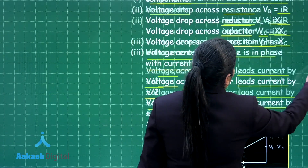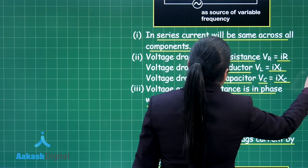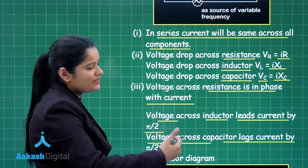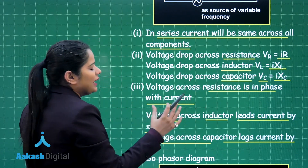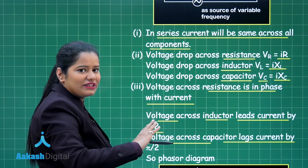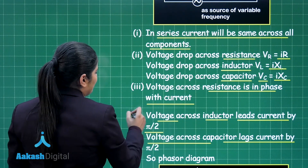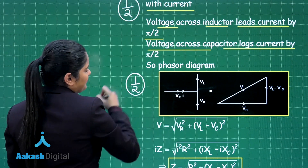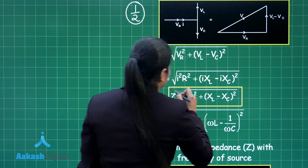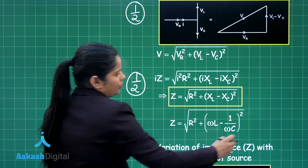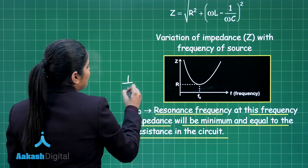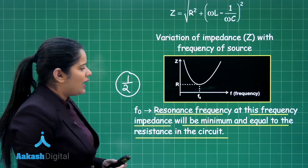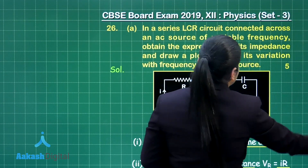This part of the question is for two marks. You will get half a mark for explaining the voltage drop calculation across each component and the phase differences. You will get half a mark for the phasor diagram, half a mark for calculating the impedance, and the final half mark for drawing the variation of impedance with frequency. I hope this marking scheme is clear to you.